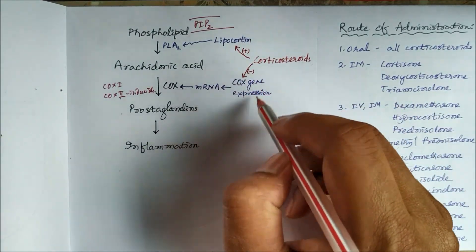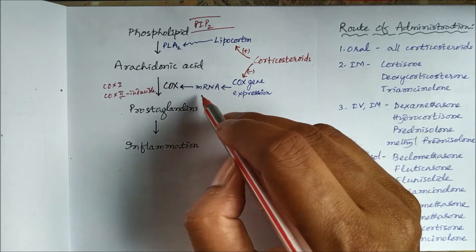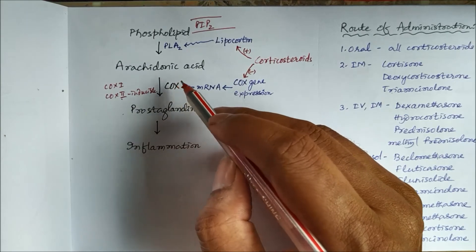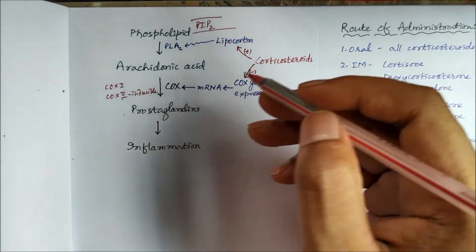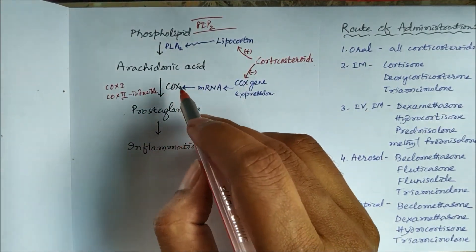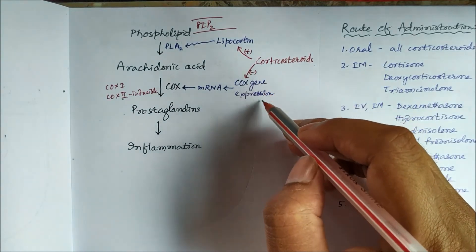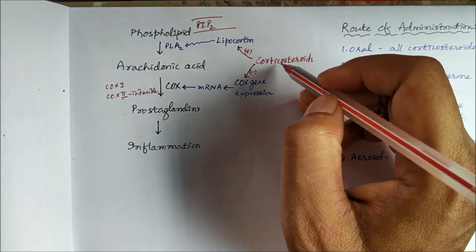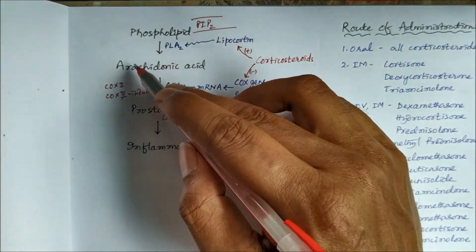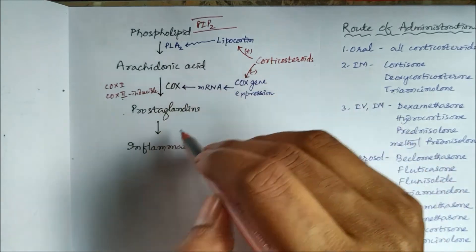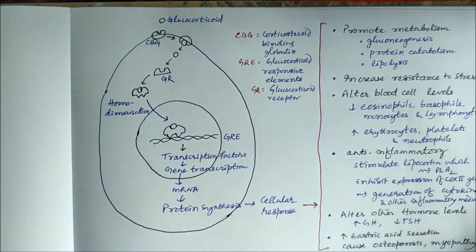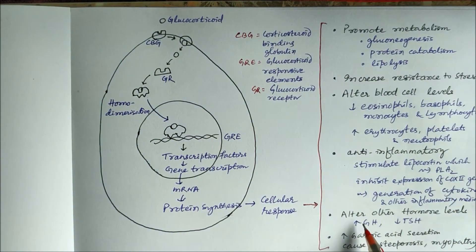Corticosteroids inhibit COX gene expression, thereby inhibiting mRNA production and the cyclooxygenase enzyme, so prostaglandins are not produced. Corticosteroids also stimulate lipocortin, which inhibits phospholipase A2, so arachidonic acid is not produced, and consequently there is no prostaglandin synthesis and no inflammation. This is how corticosteroids act as anti-inflammatory drugs.